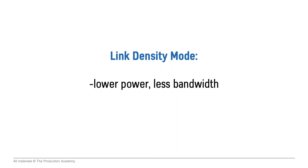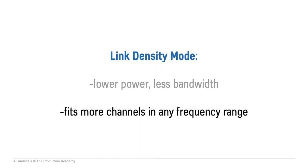You can really see where the technology is headed if you consider how advanced systems like the Digital 6000 pull this off. The circuitry is designed to be intermodulation-free, which is pretty amazing, so we don't have to worry about avoiding certain intervals between frequencies. Plus, you can enable something called link density mode, which transmits at a lower power and less bandwidth to fit even more channels into any frequency range.